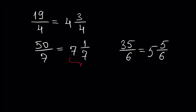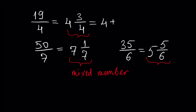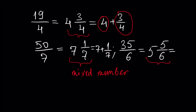This kind of numbers are called mixed numbers. We use this term because we have a whole part and a fraction. For example, the first number by definition is equal to 4 plus 3 over 4, where 4 is the whole part and 3 over 4 is the fraction. Similarly, 50 over 7 equals 7 plus 1 over 7, and 35 over 6 equals 5 plus 5 over 6. So a mixed number has a whole part and a fraction.